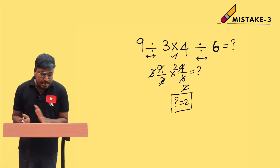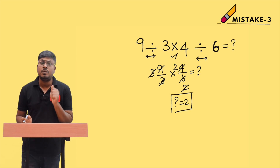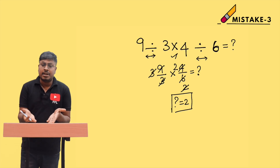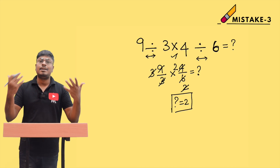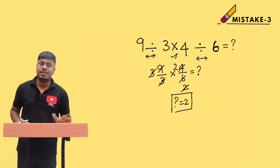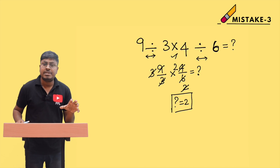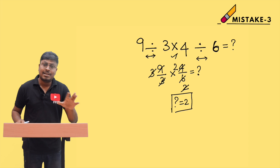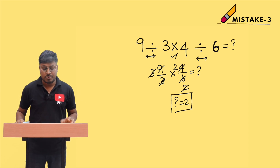Don't make this mistake again and again in exams. Remember the BODMAS rule. Many students, just by looking at the question, multiply 4 × 3 = 12 and start solving from there — that is wrong. Whenever you solve a question based on equations or mathematical operations, always apply the BODMAS rule first.